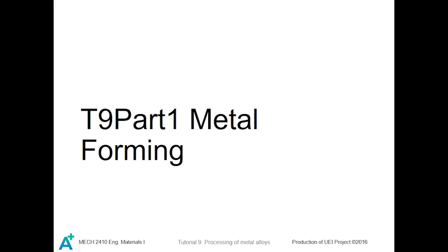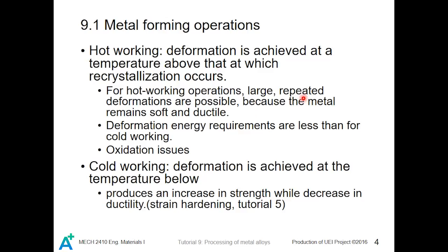Tutorial 9, Part 1: Metal Forming. All metal forming operations can be characterized by their working temperature. If the working temperature is above the recrystallization temperature, we call it hot working; if it is not, we call it cold working. We consider deformation in both of these processes.